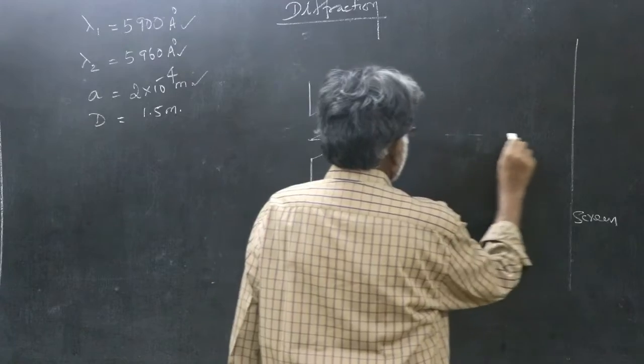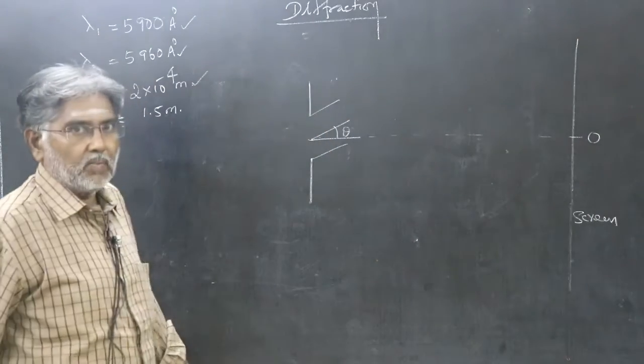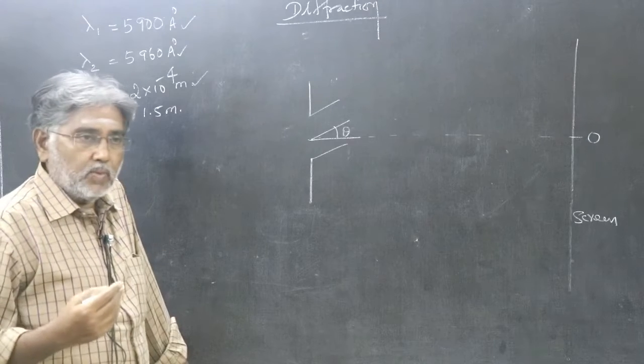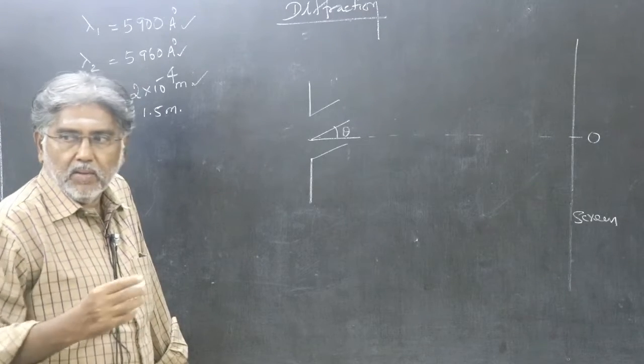This is central maximum. Let us say O. O is the central maximum. On either side of the central maximum, you will have minima and secondary maxima.